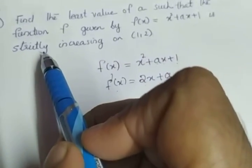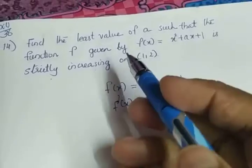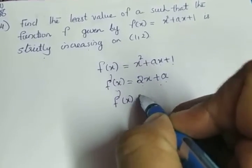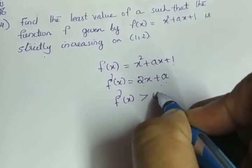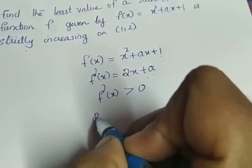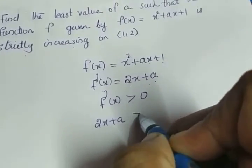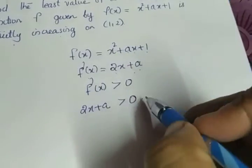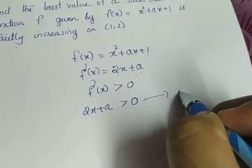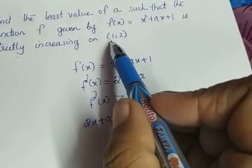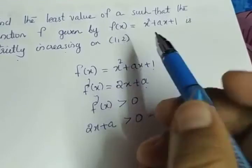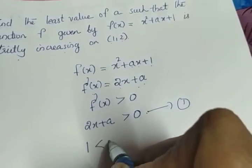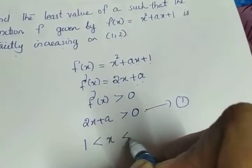It is already said in the question that the function is strictly increasing. We know the condition that if it is strictly increasing, f'(x) is greater than 0. That means 2x + a > 0. Let this be equation number 1. The condition given is on the interval (1, 2), that means 1 < x < 2.